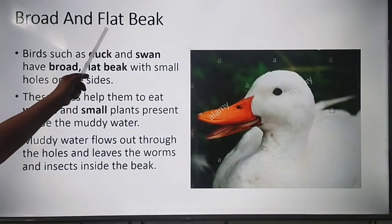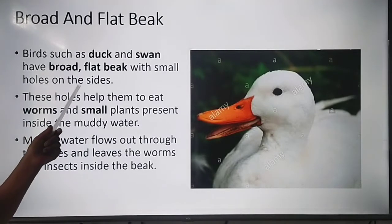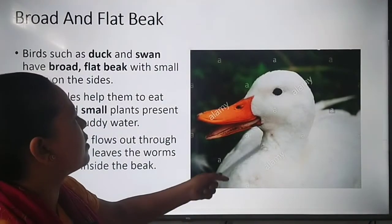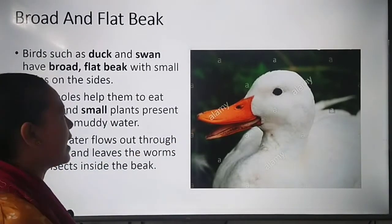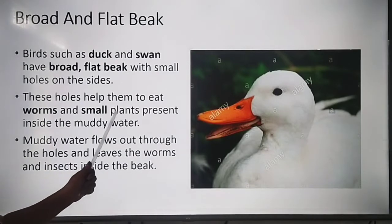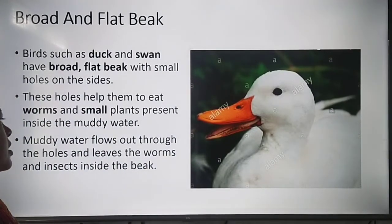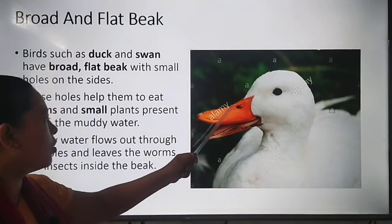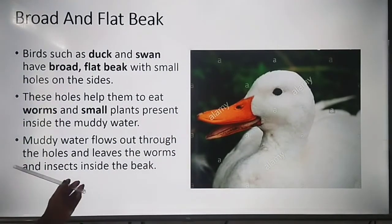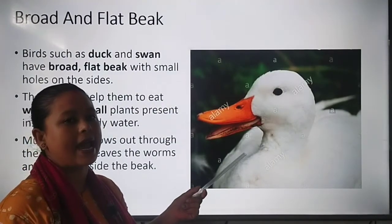Next is the broad and flat beak. Birds such as ducks have a broad, flat beak with small holes on the sides. These holes help them to eat worms and small plants present in muddy water. The muddy water flows out through the holes, leaving the worms and insects inside the beak so the bird can eat them.